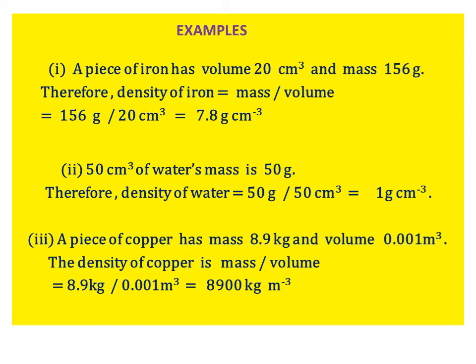Example 3. A piece of copper has mass 8.9 kilogram and volume 0.001 meter cube. The density of copper is mass divided by volume, equal to 8.9 kilogram divided by 0.001 meter cube, equal to 8,900 kilograms per meter cube.